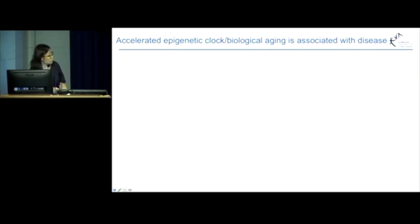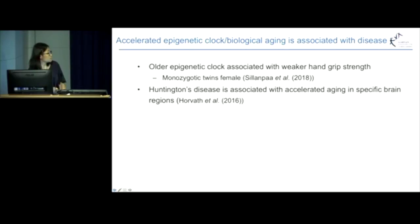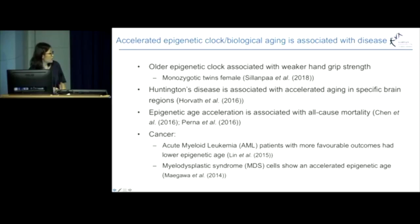Researchers have shown that having an accelerated epigenetic clock can lead to a range of diseases and phenotypes. For example, an older epigenetic clock is associated with weaker hand grip strength in females. Huntington's disease shows signs of accelerated aging in specific brain regions. Epigenetic age acceleration is associated with an increased risk of all-cause mortality. And in cancer, acute myeloid leukemia patients have more favorable outcomes if they show a lower epigenetic age, and myelodysplastic syndrome cancer cells themselves show an accelerated epigenetic age.